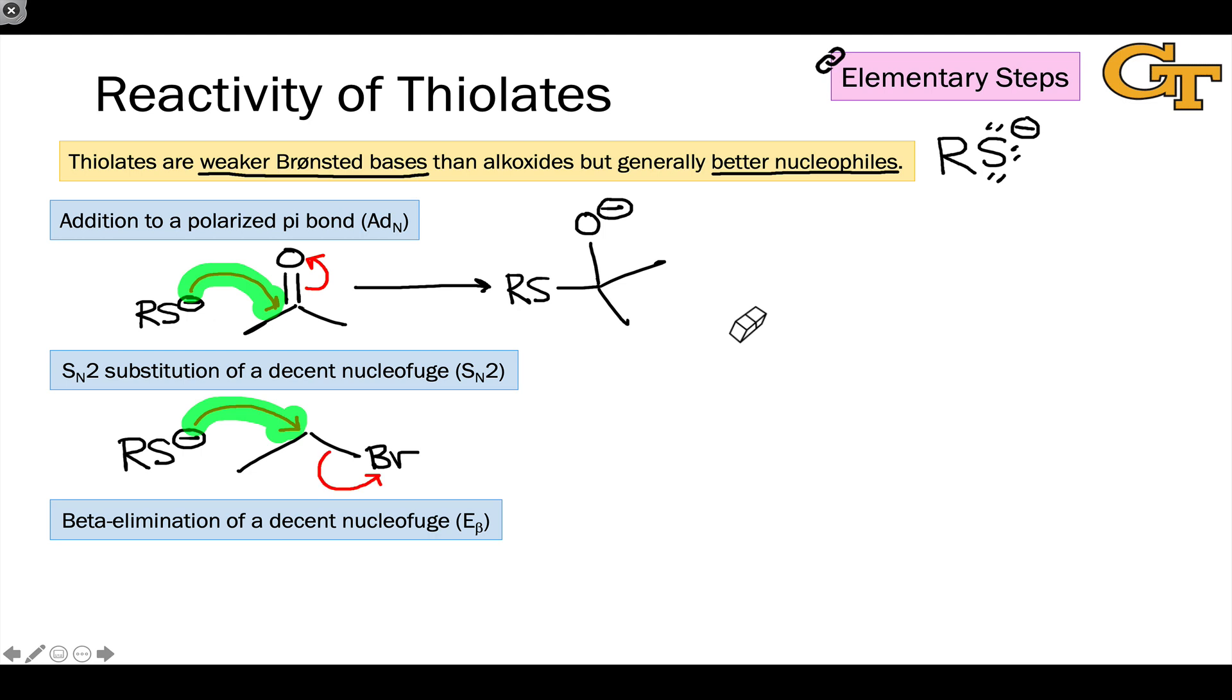So in the step you're seeing here, the anionic sulfur donates a pair of electrons to the electrophilic carbon atom, and the carbon-bromine bond breaks toward the more electronegative bromine atom. The resulting products are a thioether, which is a sulfur analog of the ether, and bromide anion, Br minus.